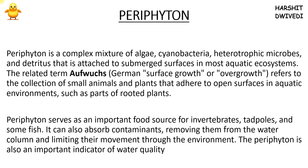The next classification is periphyton. Periphyton is actually a complex mixture of algae, cyanobacteria, heterotrophic microbes, and detritus. They are attached to submerged surfaces in most aquatic ecosystems. There is one more related term: aufwuchs (A-U-F-W-U-C-H-S), which means surface growth or overgrowth. Periphyton and aufwuchs belong to the same category — they are small animals and small plants that adhere to open surfaces and submerged surfaces, and are attached to the leaves of rooted plants.